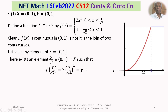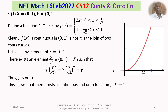Somebody may ask: suppose y takes the value 1, is f(1/√2) = 1? Yes, because of the definition. So for each element in the range, we have a pre-image. Therefore f is onto. Thus, we have exhibited a function f from X to Y which is continuous and onto. Therefore, there exists a continuous and onto function f from X to Y.